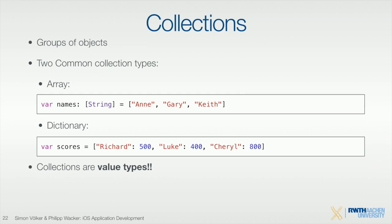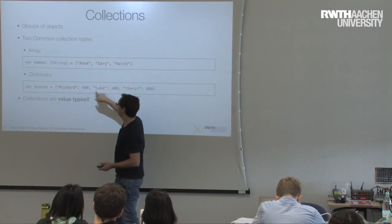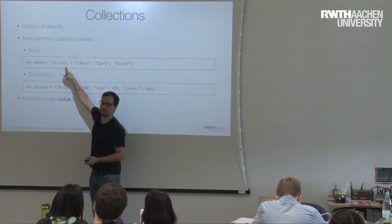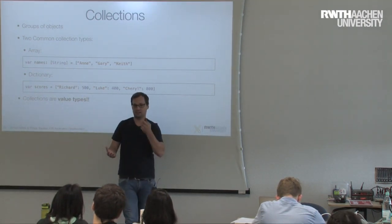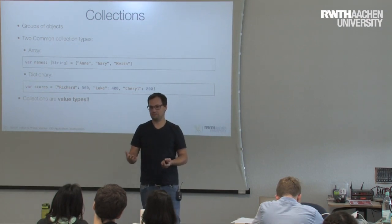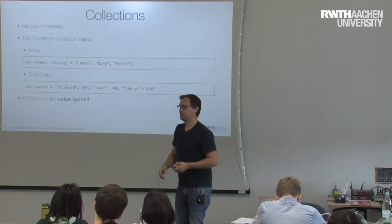A dictionary is a lookup table — you have a key and a value. You can ask the dictionary for the value of a key, for example Richard, and it returns a value. You have to define both the key type and the value type — in this case string and integer. You can use any types for both. You can also convert a dictionary to get all its keys or all its values.